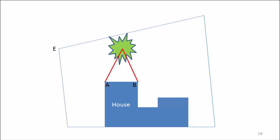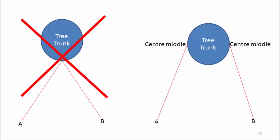You can also use triangulation to plot the position of trees and other elements in the garden. When measuring a tree, you run each tape to the centre middle, rather than the front of the trunk, as this will give us a more accurate reading.